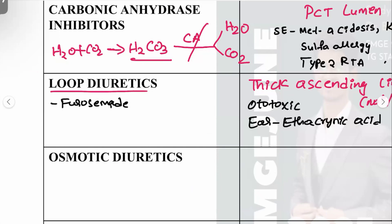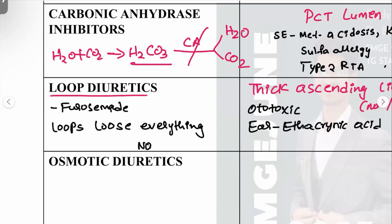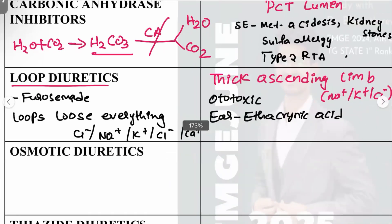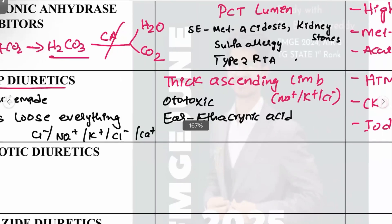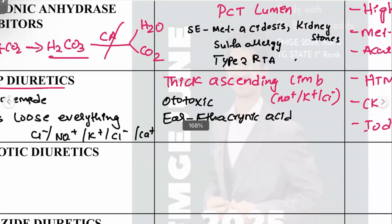A key mnemonic: 'loops lose everything.' Loop diuretics cause loss of sodium, potassium, chloride, and calcium — all electrolytes are lost. This can cause dehydration in the patient, with hypernatremia and hypokalemia being most pronounced.